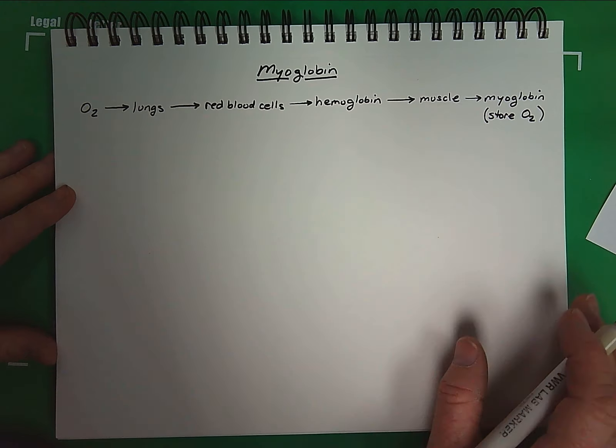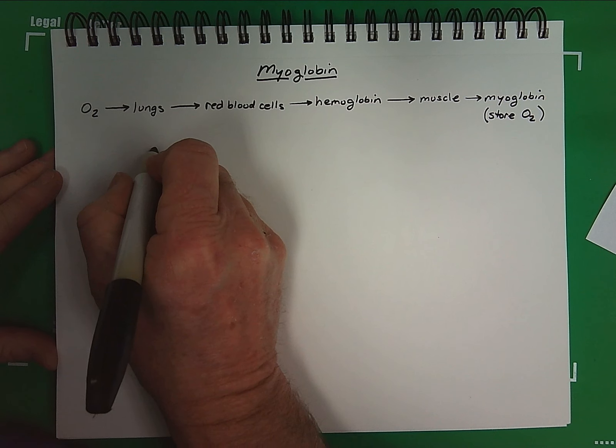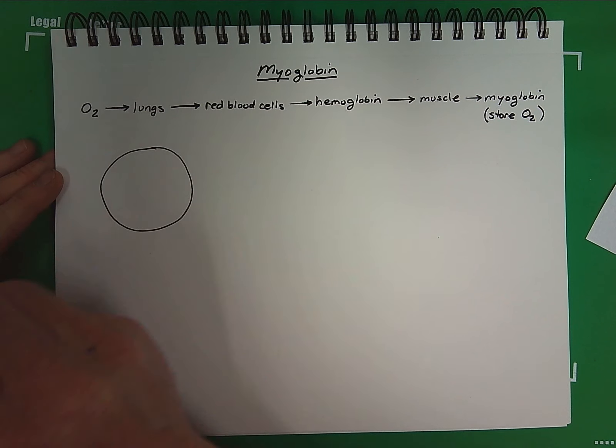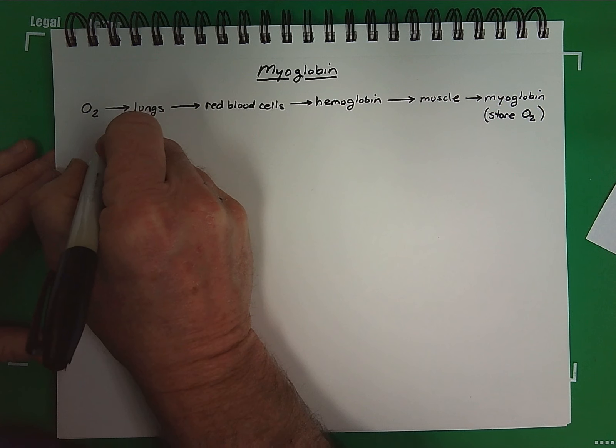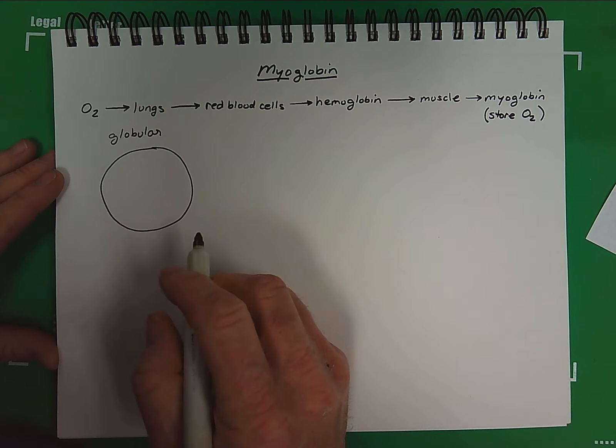Now let's take a look at the structure of myoglobin. Myoglobin is a single polypeptide. It is a globular structure, which means that it has a lot of alpha helices that fold back on itself.